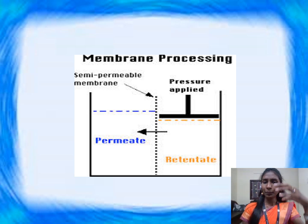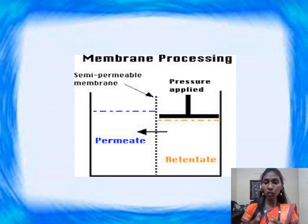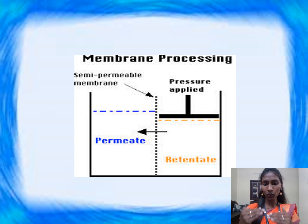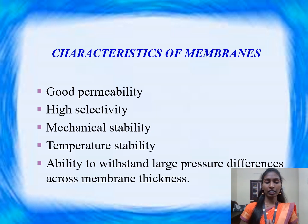When pressure is applied, the molecules processed through the semi-permeable membrane are called permeate, and the retentate or concentrate is settled down at the bottom of the membrane.